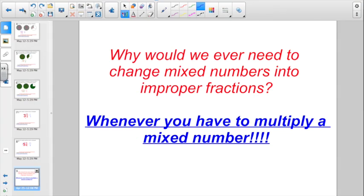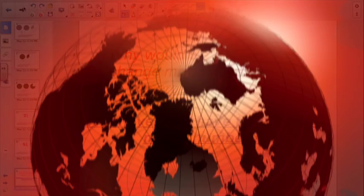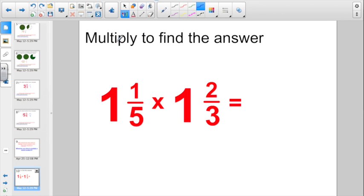But why would you ever need to change mixed numbers into improper fractions? We've been saying all year that an improper fraction is not a proper fraction. Not the right way, right? Well, you're going to do it whenever you have to multiply a mixed number. So let's take a look and see how this is going to be applied. Sometimes you might have to multiply 1 and a fifth times 1 and 2 thirds. How are we going to go doing this?